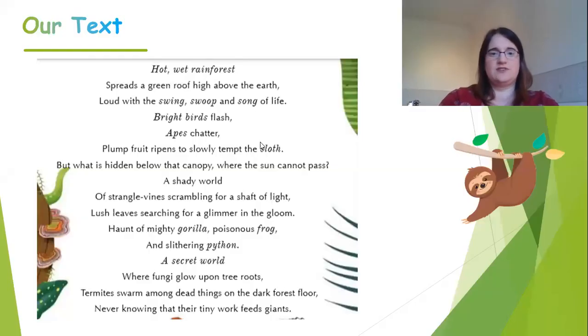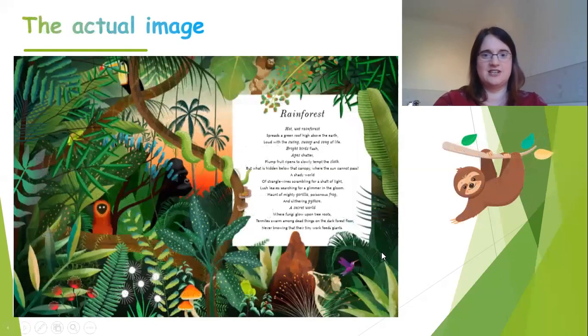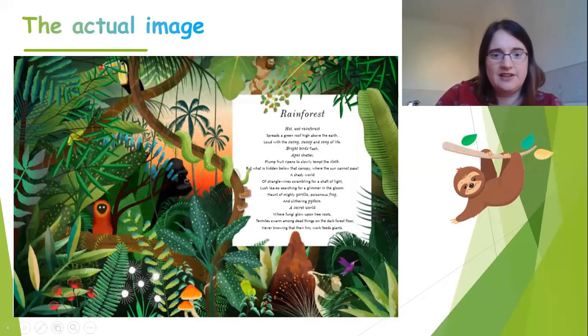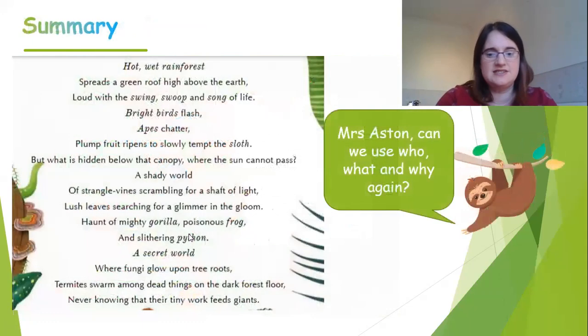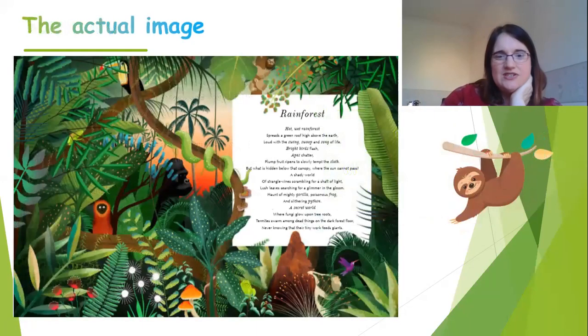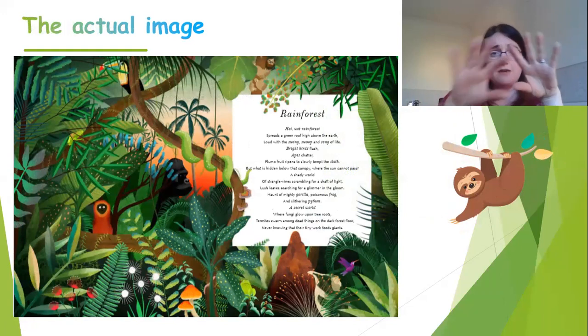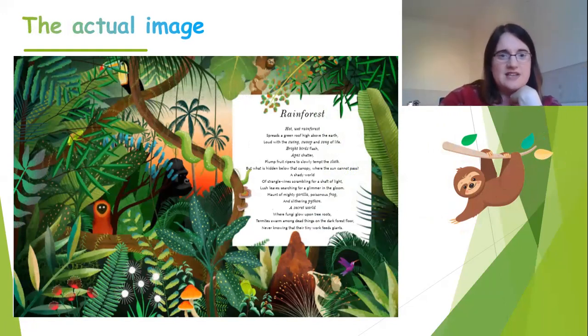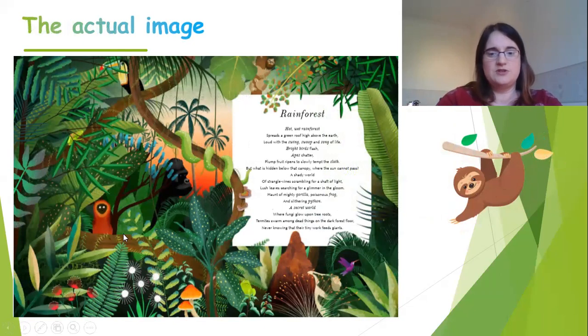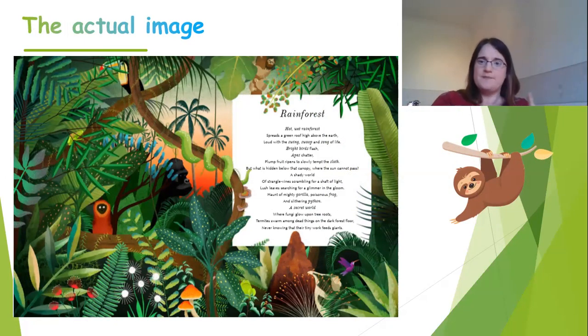Hopefully you've done a beautiful picture. Yours is not going to be exactly the same as the picture she produced, but as long as you've included lots of different things. Here is the actual picture — you can see the ape that's chattering, the fungi glowing upon the tree roots at the bottom, the vines. Double-check: go through the poem again and make sure you've included all those different things. Obviously lots of green in there for the rainforest with all those beautiful green plants.